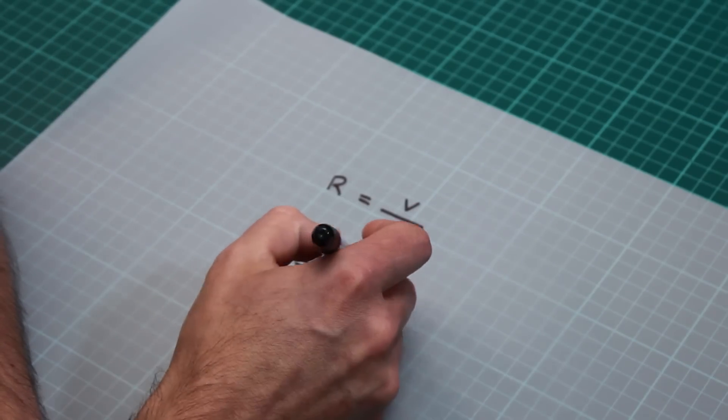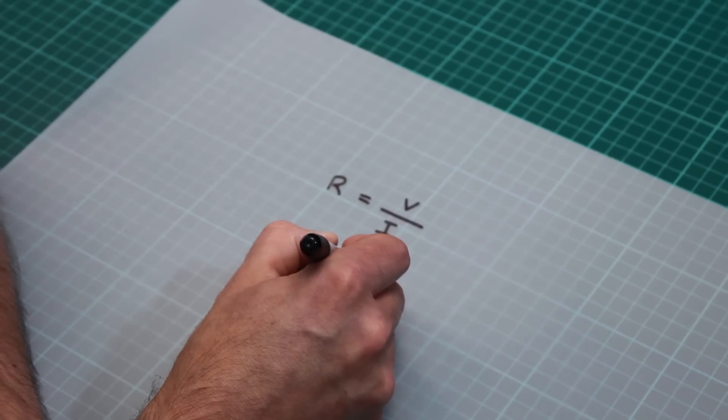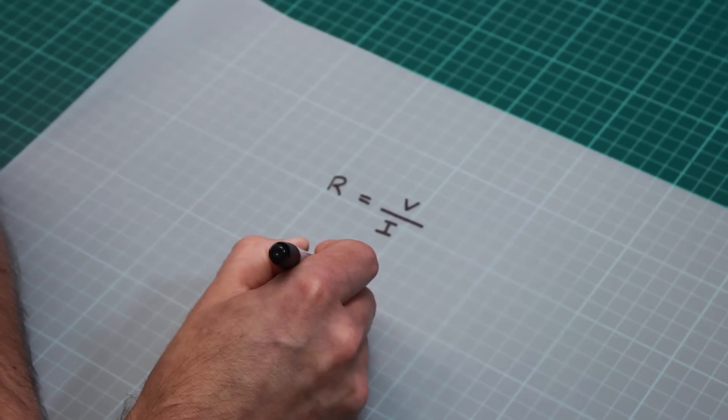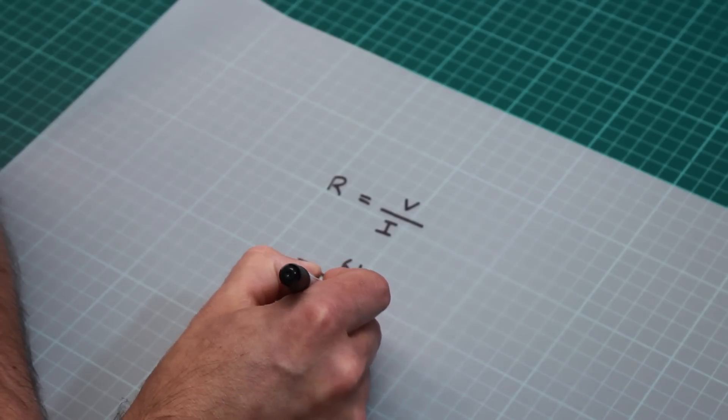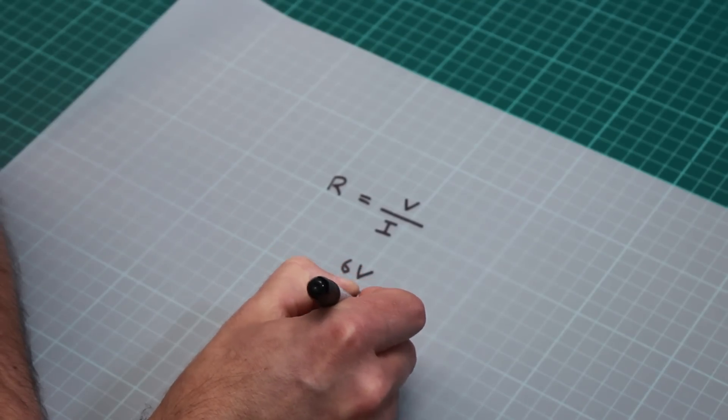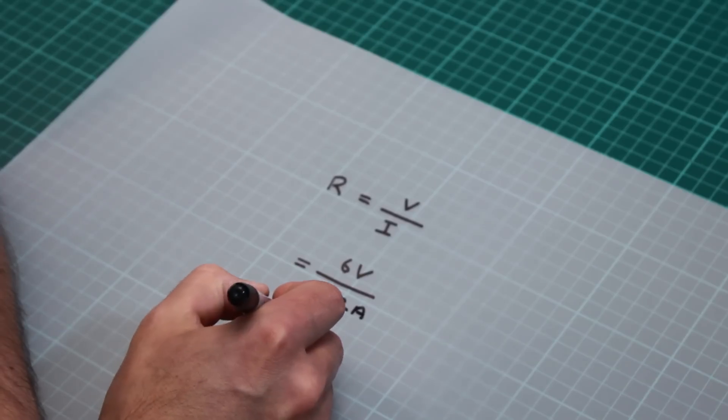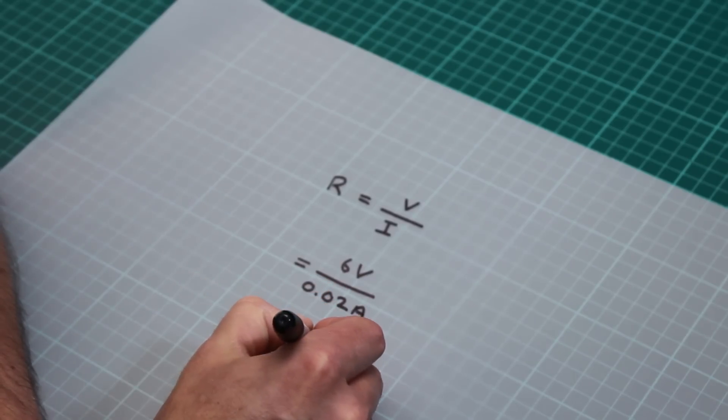So we now have six volts divided by 20 milliamps, which is 0.02 amps, which gives us a resistor value of 300 Ohms.